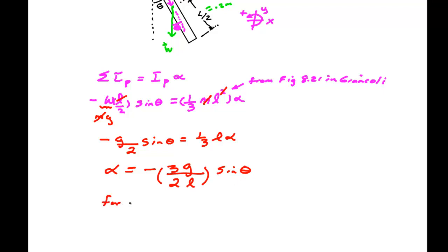For small angles we have sine theta approximately theta in radians. Remember we just do not use degrees. So alpha is approximately minus 3/2 G over L times theta.